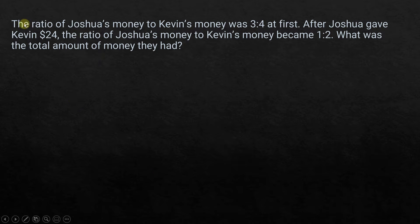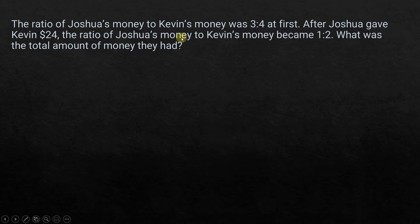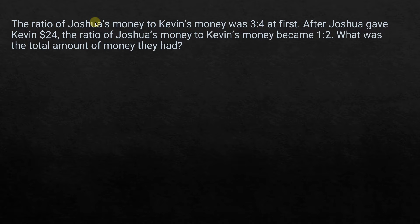The question is: the ratio of Joshua's money to Kevin's money was 3 to 4 at first. After Joshua gave Kevin $24, the ratio of Joshua's money to Kevin's money became 1 to 2. So what was the total amount of money they had? We know initially there is a ratio between Joshua and Kevin's money, and after Joshua gives money to Kevin, the ratio changes to 1 to 2.